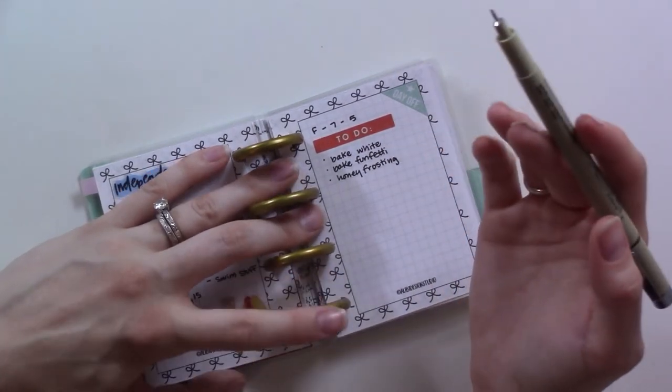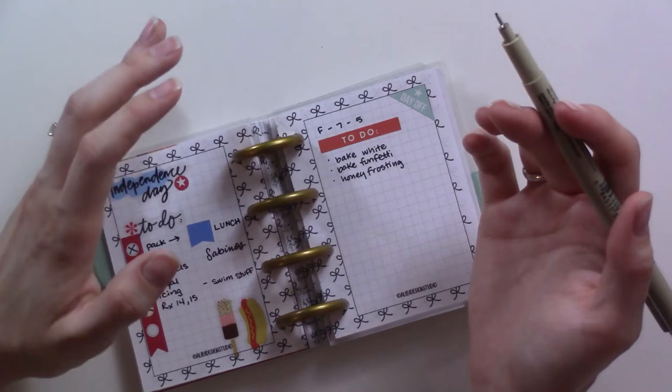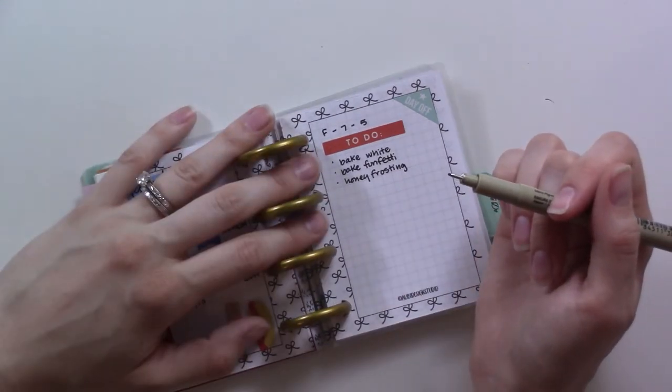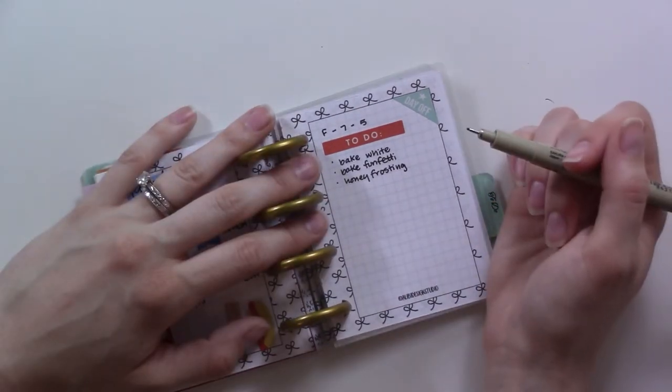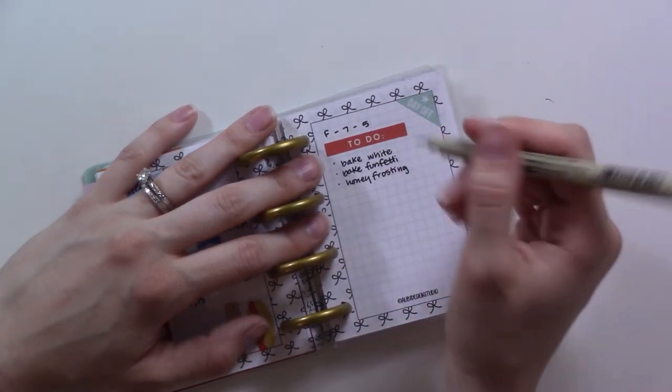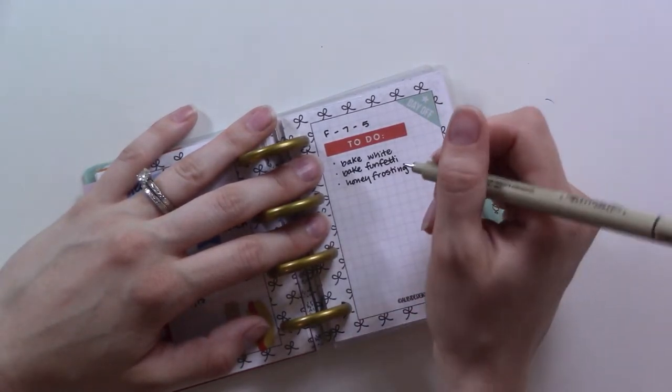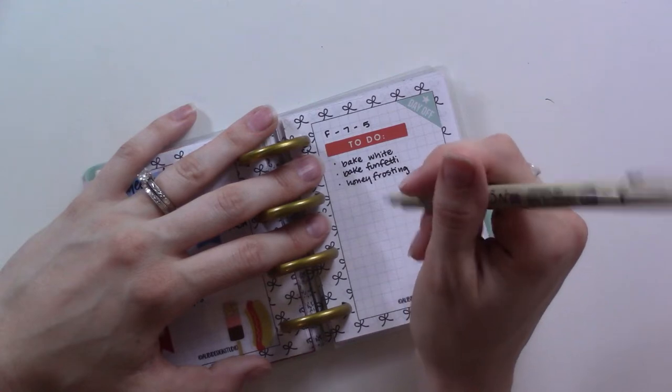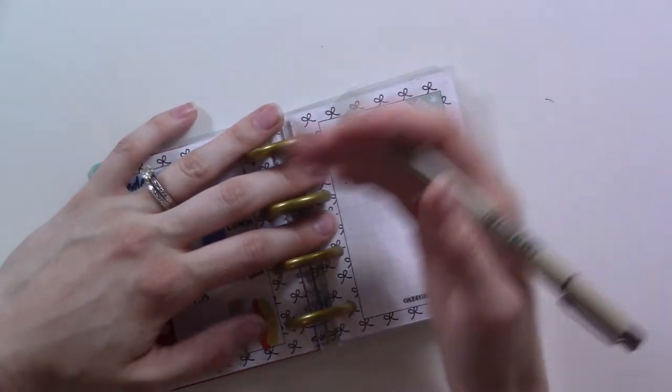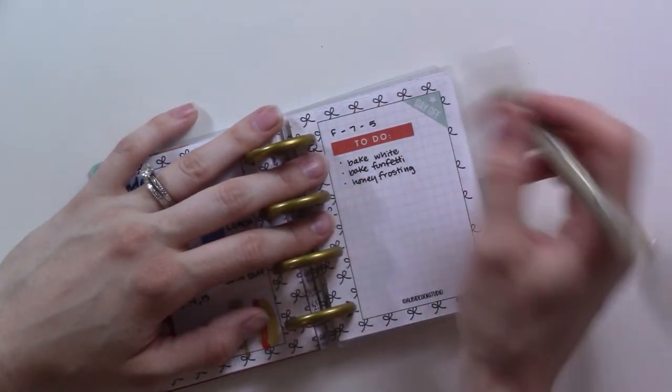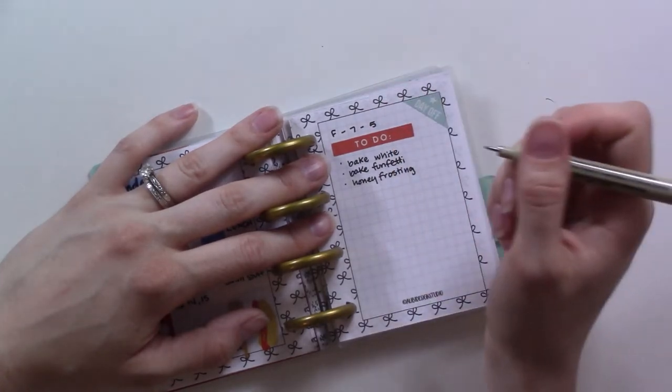It has to do with it possibly causing... I've forgotten. It'll come to me. Anyway, so now that she's a year old, she's allowed to eat honey. So I'm making honey frosting for one of the cakes.